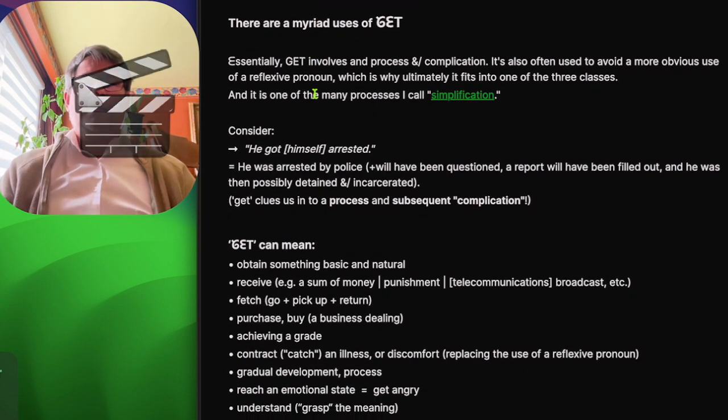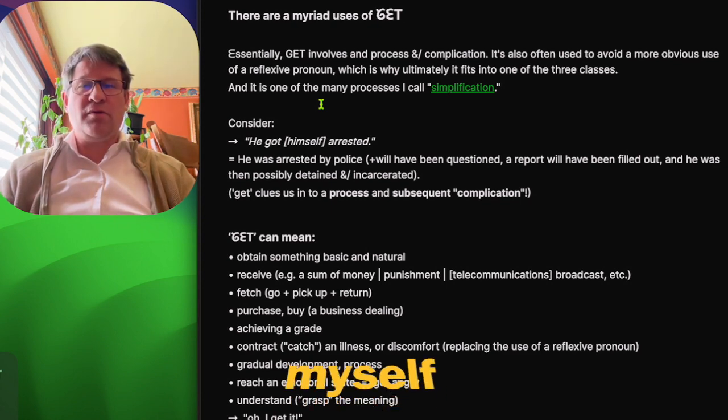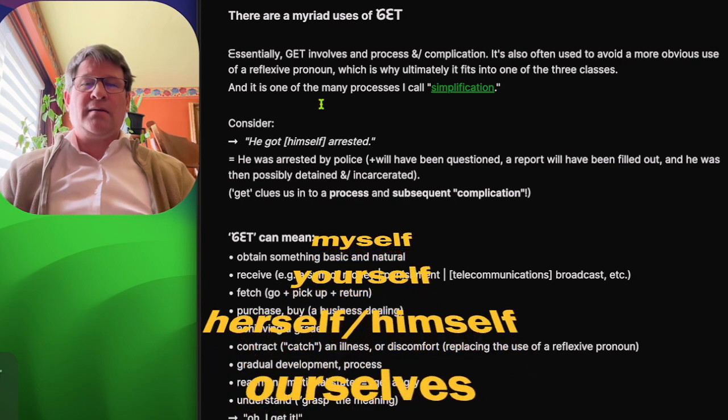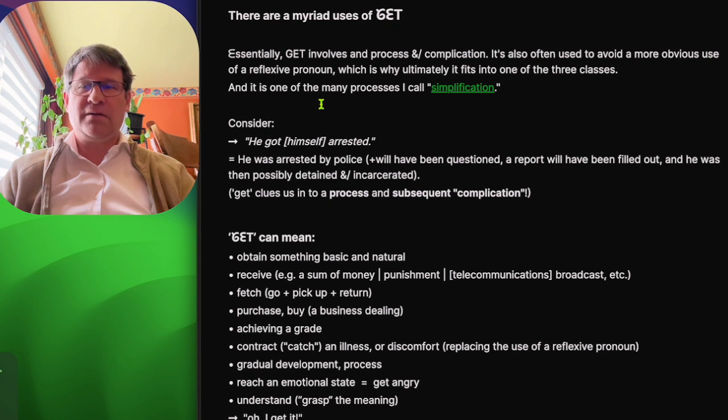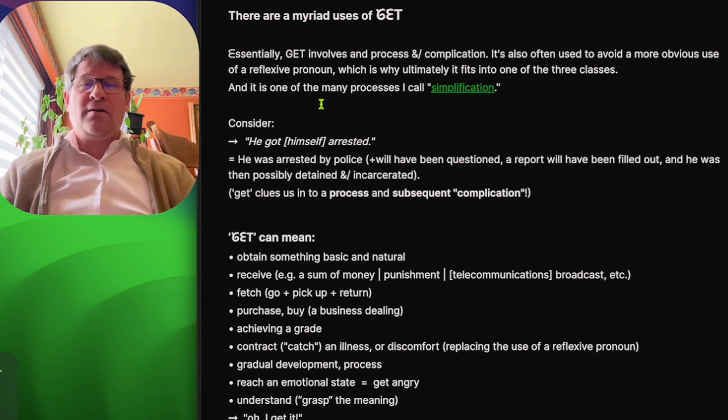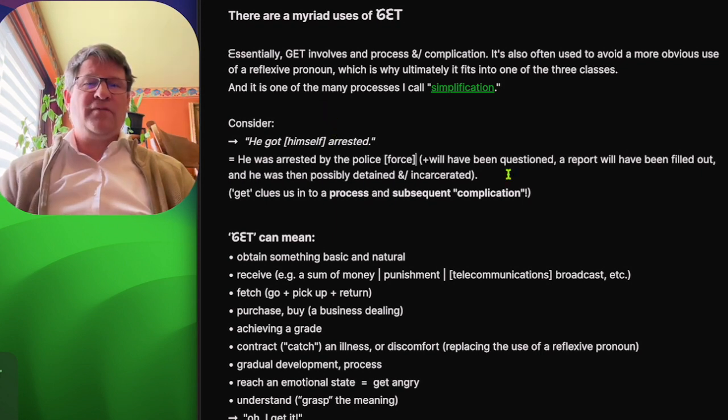In this case, essentially, get involves a process and or complication. It's also often used to avoid a more obvious use of a reflexive pronoun. And it is one of many processes I call simplification, which you can follow in my other videos. Consider, he got arrested. So he was arrested by the police and will have been questioned. And a report will have been filled out and he was then possibly detained and or incarcerated.